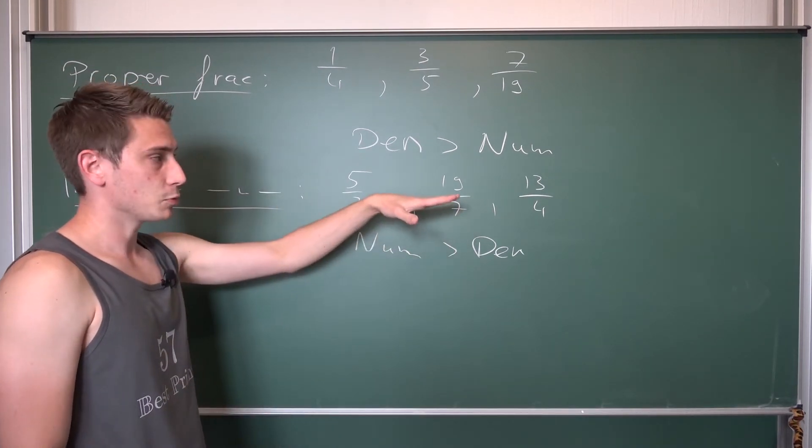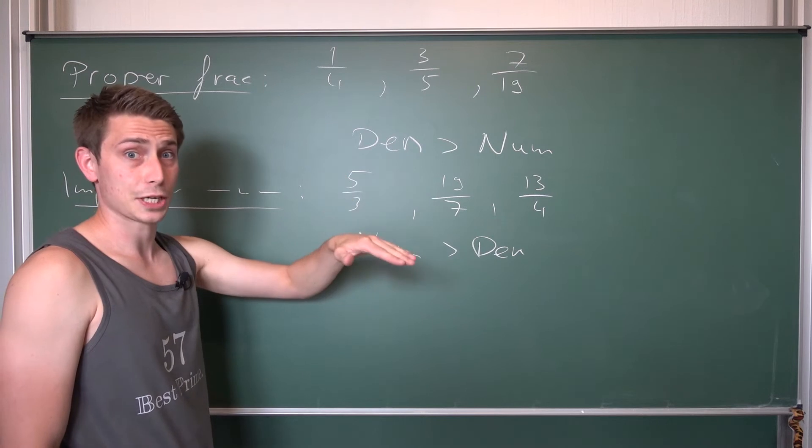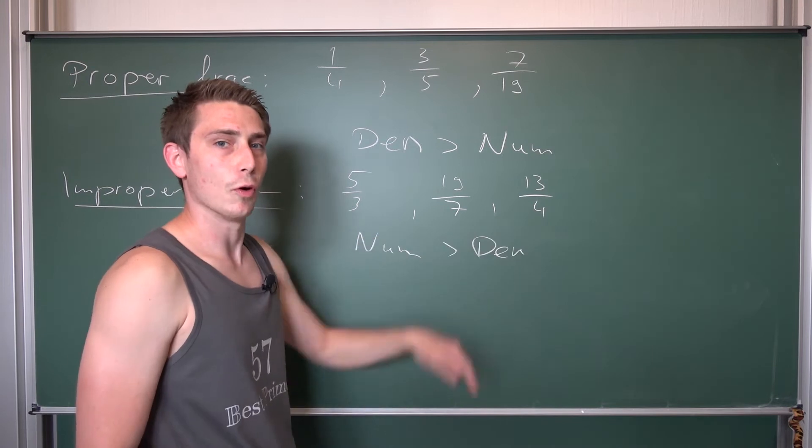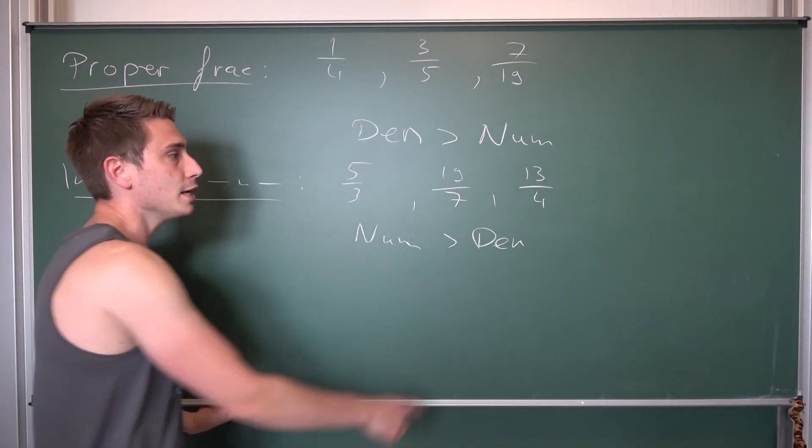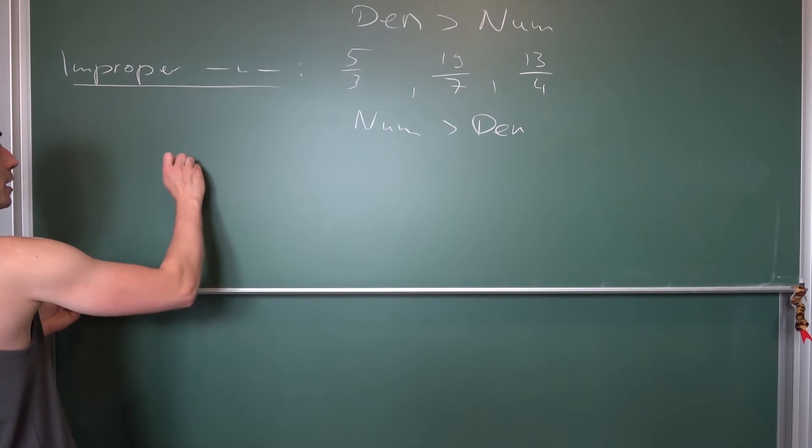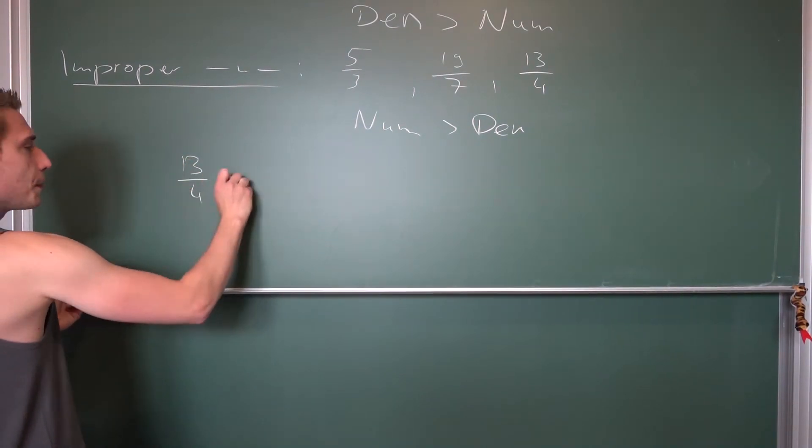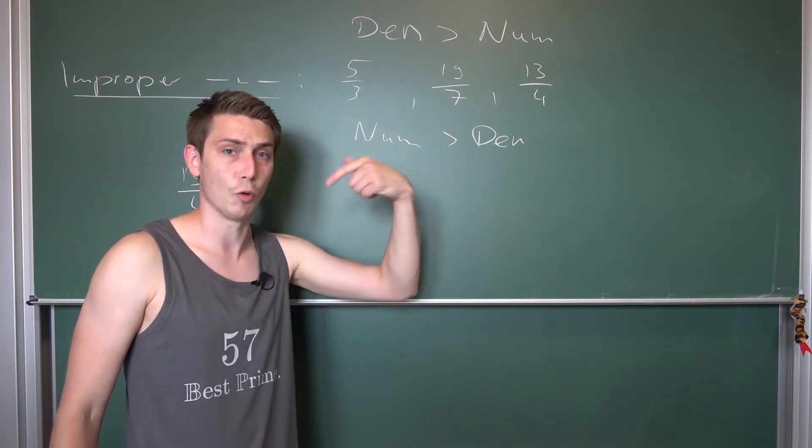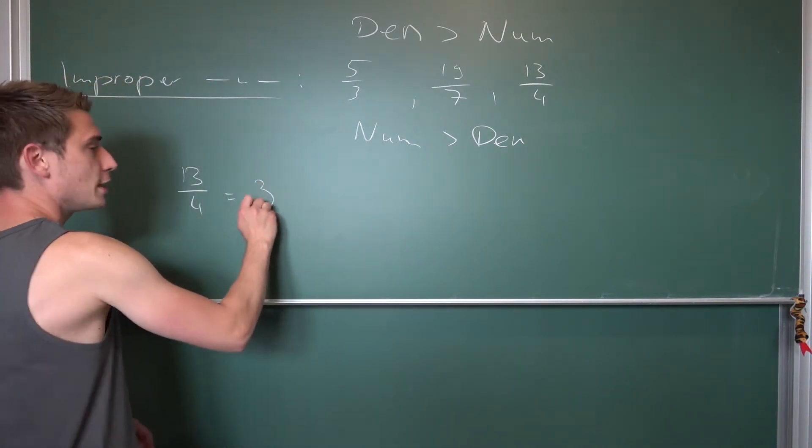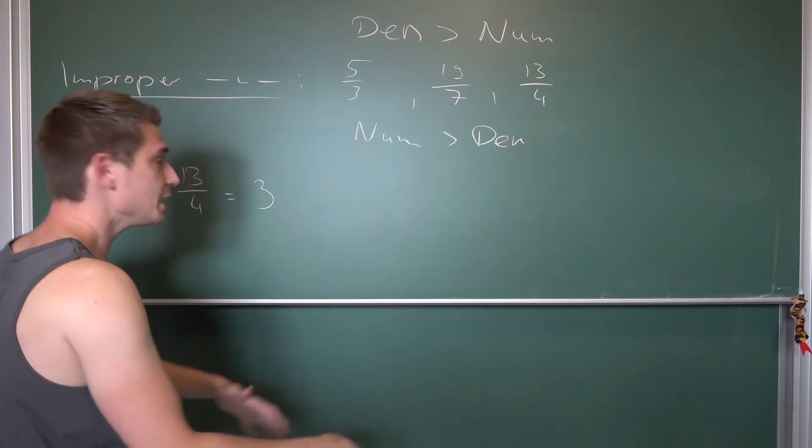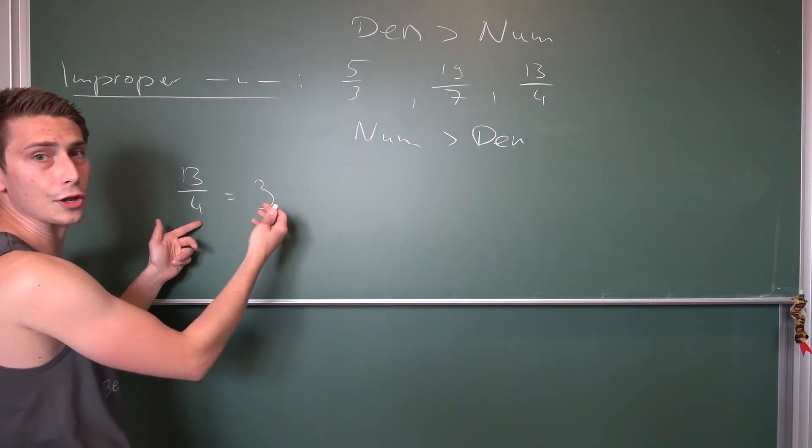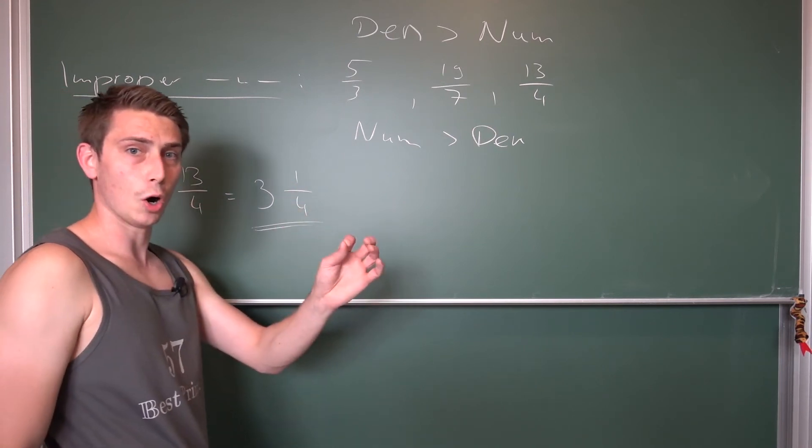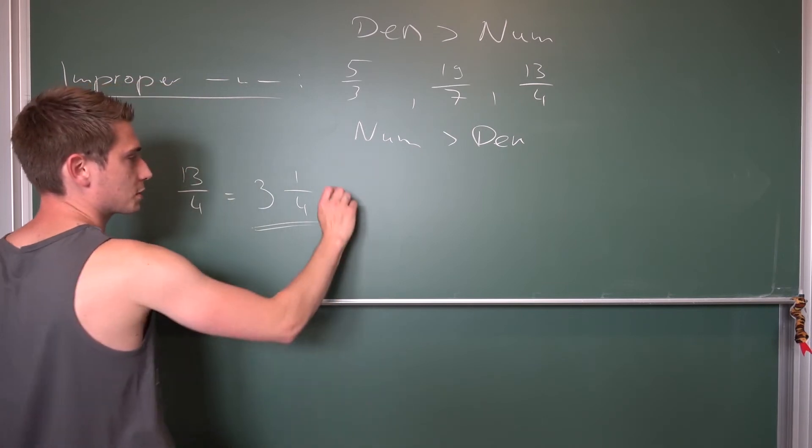Now, there's a connection between improper fractions and mixed fractions. I kind of spoiled it before. If you take a look at 13 over 4, you might ask yourself the question, how often does the 4 fit into the 13? So 13 over 4 is basically, 4 fits 3 times into 13. 3 times 4 is going to give us 12. So this is 3 whole cakes basically plus 1 quarter of a cake left. That's a mixed fraction. 3 whole and 1 quarter we are going to have here.